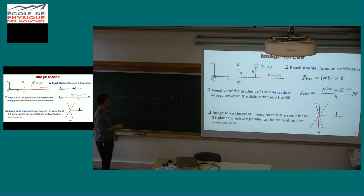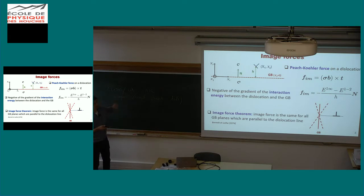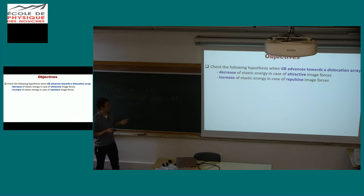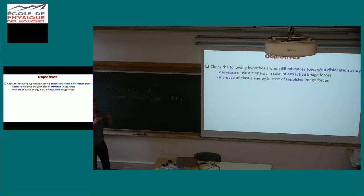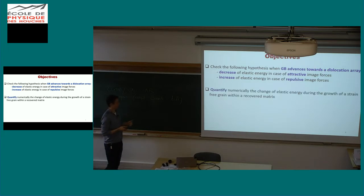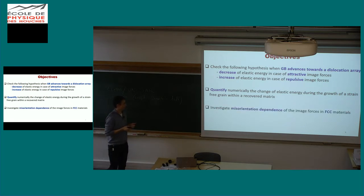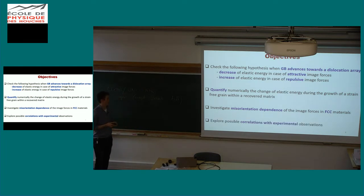The first objective of this presentation is to check the following hypothesis: we consider some dislocation array — for instance after recovery, which can be a sub-grain boundary or a tilt boundary — and we make the grain boundary advance towards this dislocation array. In the case of attractive image force, we should see a decrease of elastic energy, or an increase in case of repulsive image force. We then want to quantify numerically the change of elastic energy to see if it is significant and should be taken into account. Then we will investigate if we can get some misorientation dependence about this image force in FCC materials, and a possible correlation with experimental observations.